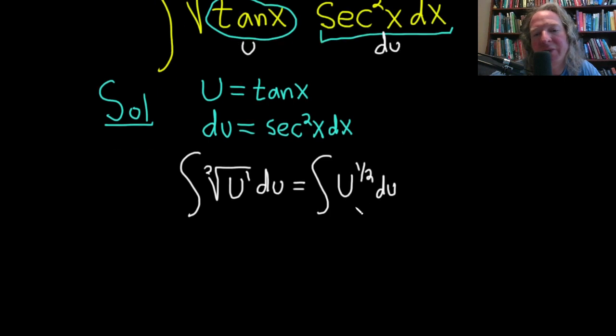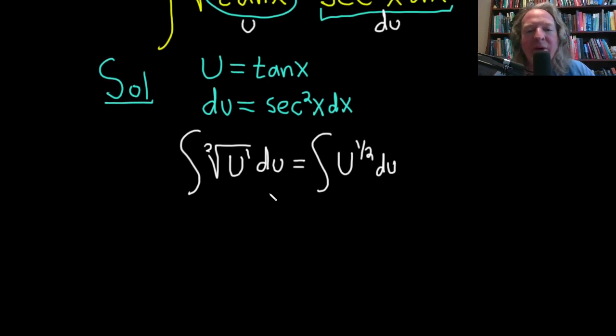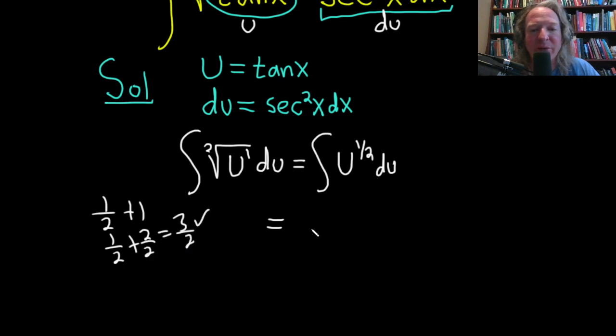Now we can integrate using the power rule, which basically says we add one to the exponent and divide by the result. So one half plus one is three halves, because it's one half plus two halves which is three halves.